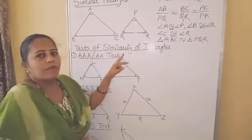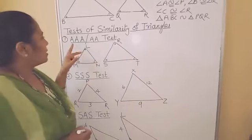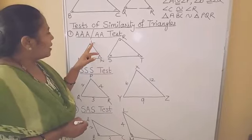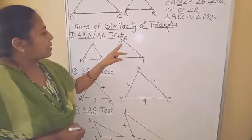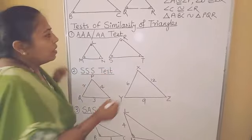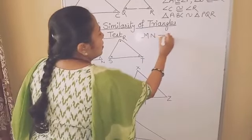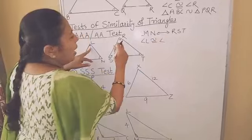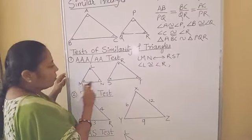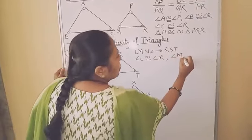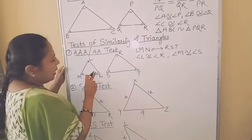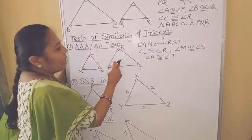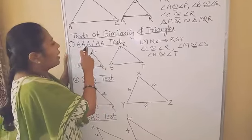Now we will see the tests of similarity of triangles. The first test is the AAA test. Here you can see there are two triangles: triangle LMN and triangle RST, with the correspondence L, M, N corresponds to R, S, T. Angle L is congruent to angle R, angle M is congruent to angle S, and angle N is congruent to angle T. Then we can say that these two triangles are similar by the AAA test — triangle LMN is similar to triangle RST by the AAA test.